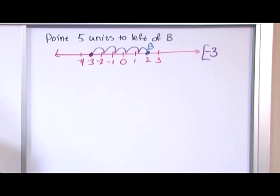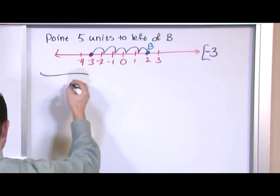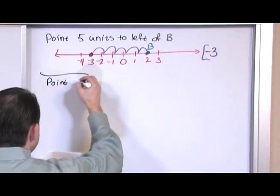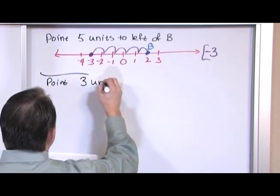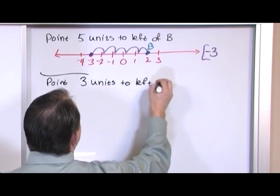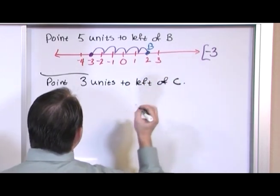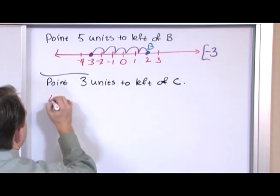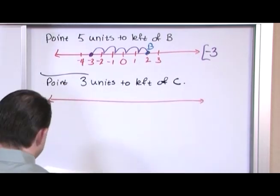All right. Now let's do one more. This one's not harder, it's just a little different. We want a point that is three units to the left of the point C that I'm going to put here on the number line for you.